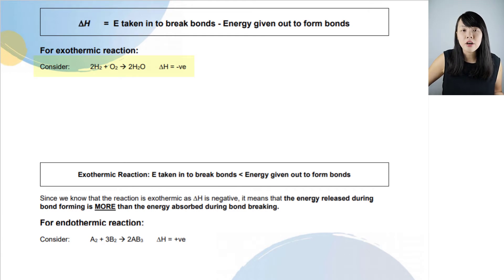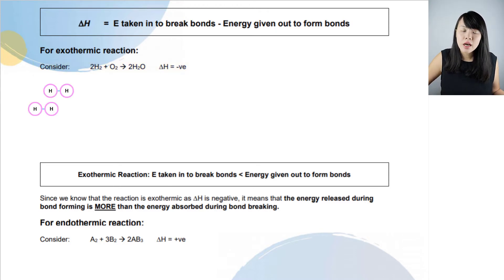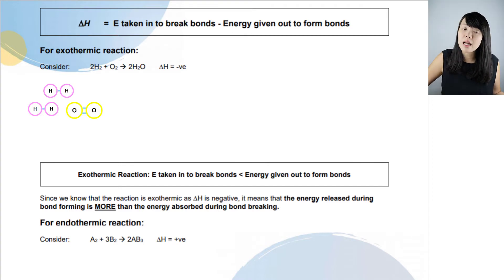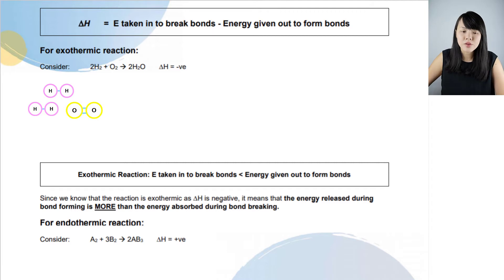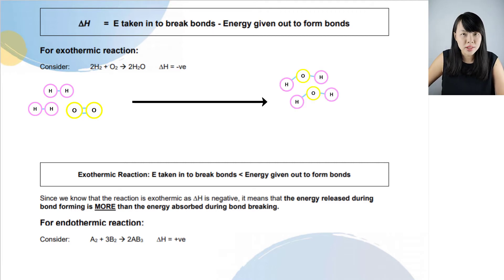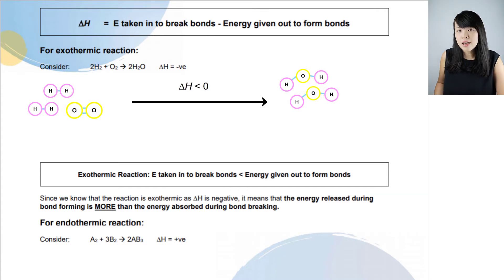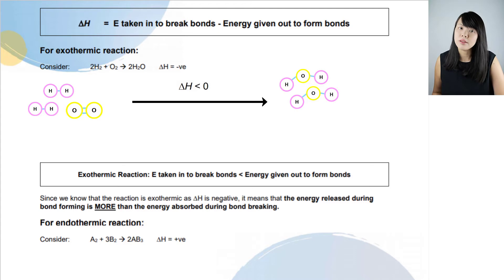Let's take this example: a reaction between hydrogen and oxygen to give water, and we are told that delta H is negative. We have two hydrogen molecules reacting with one oxygen molecule, which has a double bond between the atoms, and two water molecules are formed. With delta H being negative, is the energy taken in to break the bonds greater or smaller than the energy given out to form the bonds?